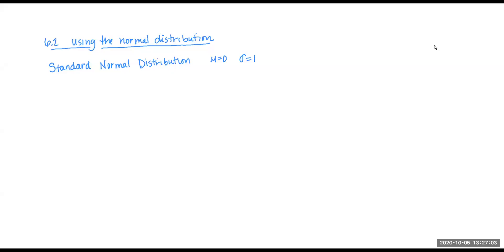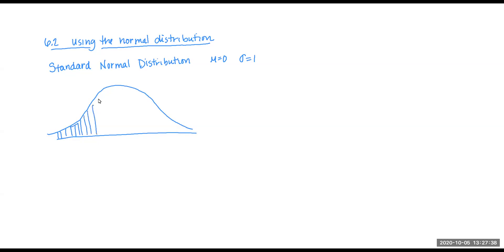This is section 6.2, which is called 'Using the Normal Distribution.' We're going to build on what we talked about in section 6.1, where we discussed the standard normal distribution and how our normal distribution is a bell-shaped curve. Think of it as a histogram with bars going from a low frequency up to a maximum, then back down.